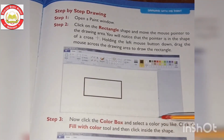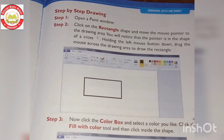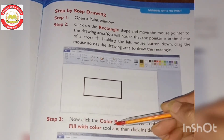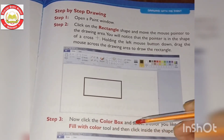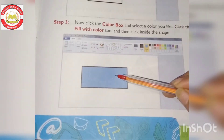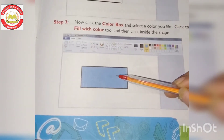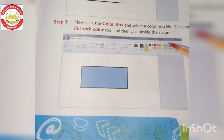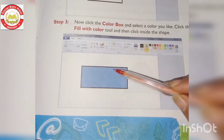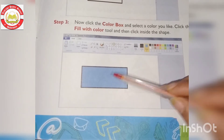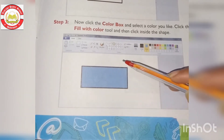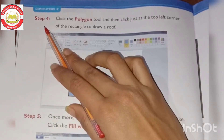Step 3: Click the color box and select a color you like. Click the Fill with Color tool and then click inside the shape. Look at the color box to see what colors are available, select the color you want, then use the Fill with Color tool to fill the rectangle.